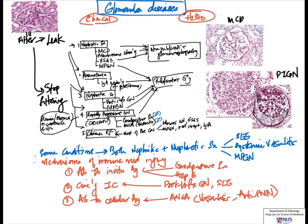Here we have most of the conditions associated with the five main clinical presentations of glomerular diseases. I've only touched on the names of these conditions — you'll need to supplement this with your notes and textbook to read about individual conditions in terms of pathogenesis and clinical features. From this list, you can see it includes primary glomerular diseases as well as some secondary or systemic diseases associated with glomerular damage or injury.